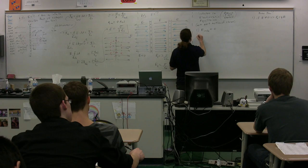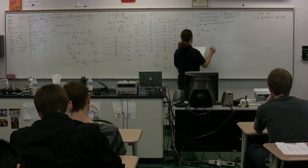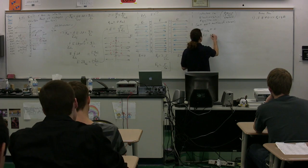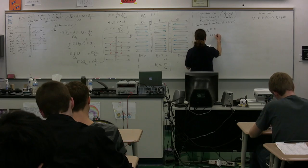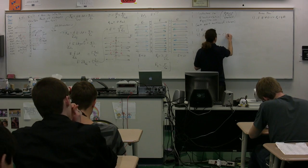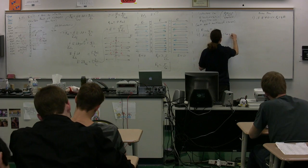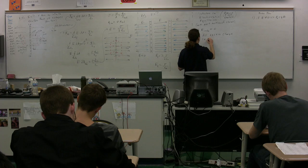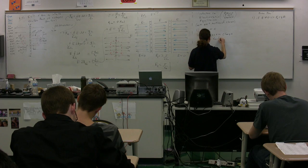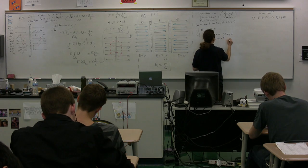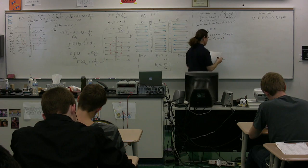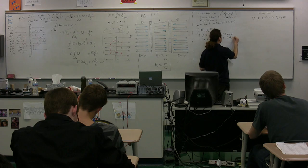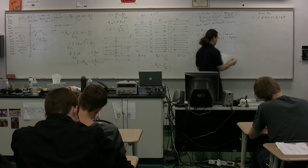Number two: all excess charge is on the surface of the object — note, of course, if the total charge Q is not equal to zero.